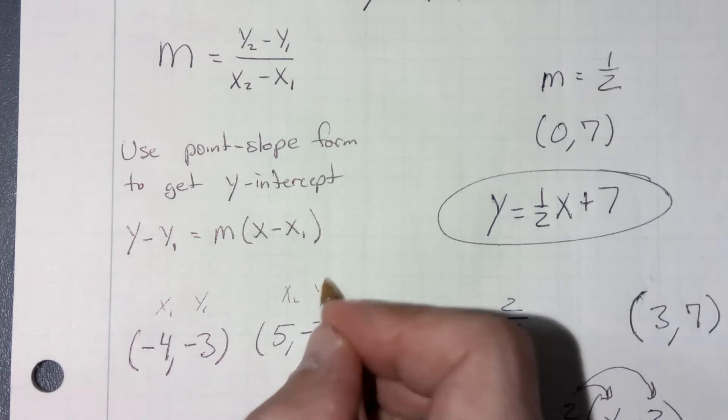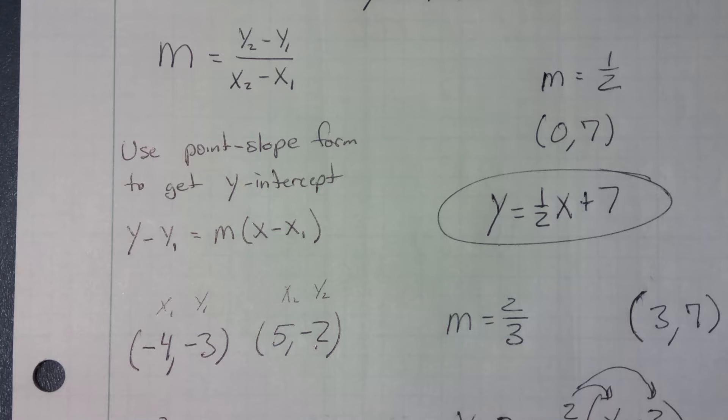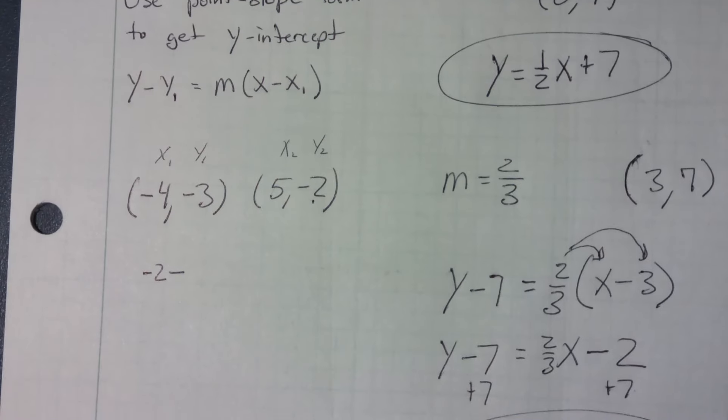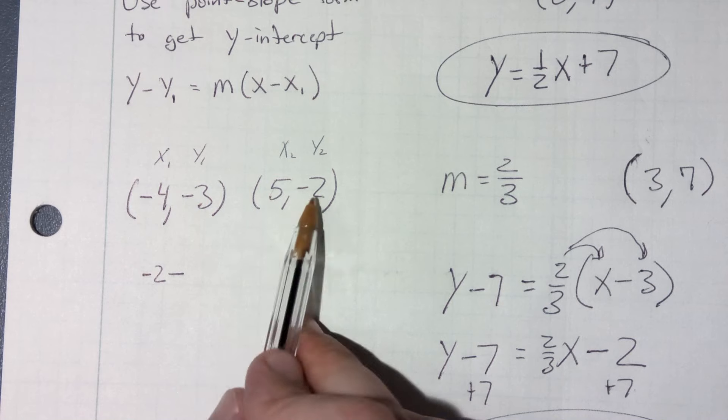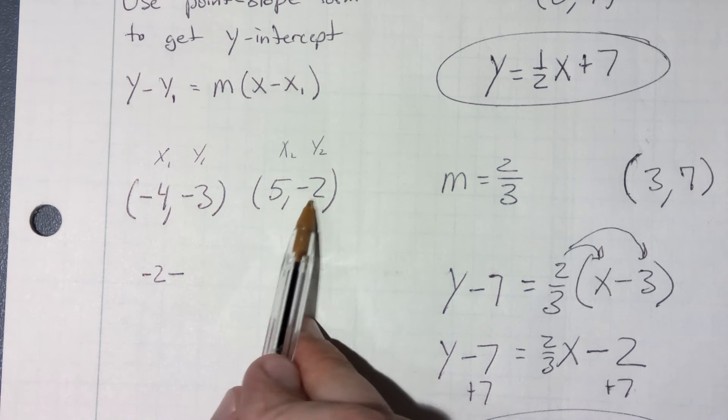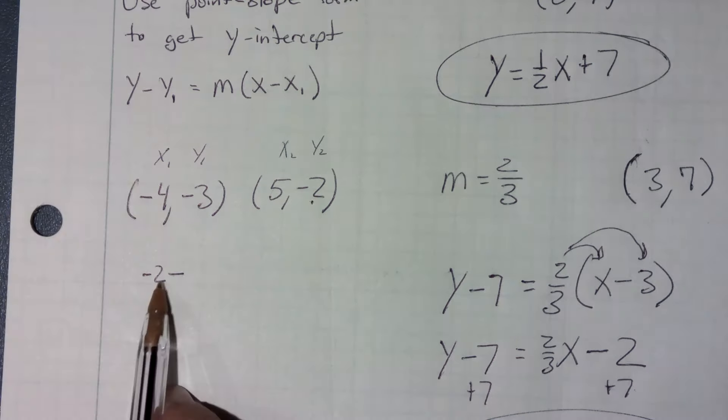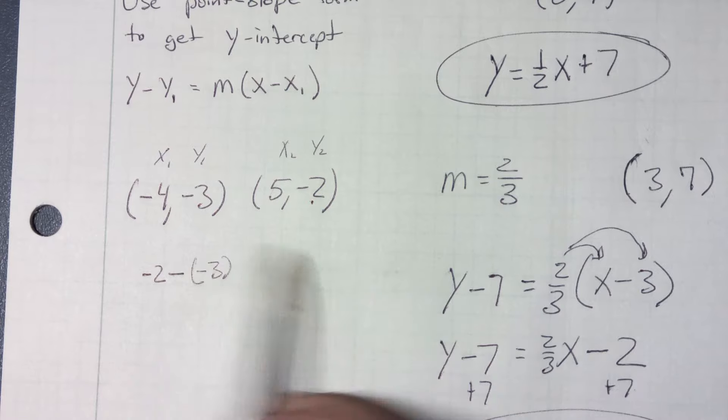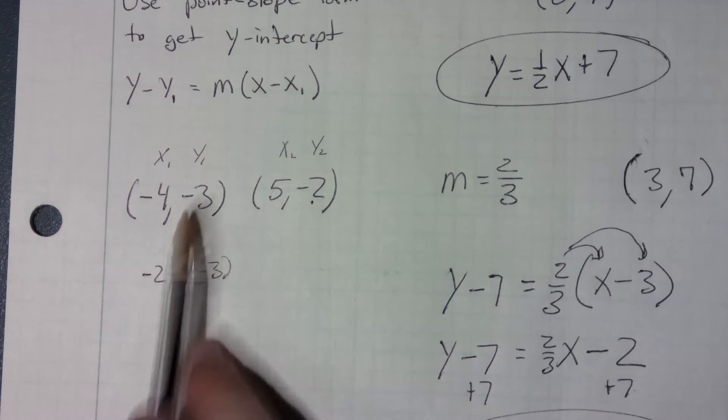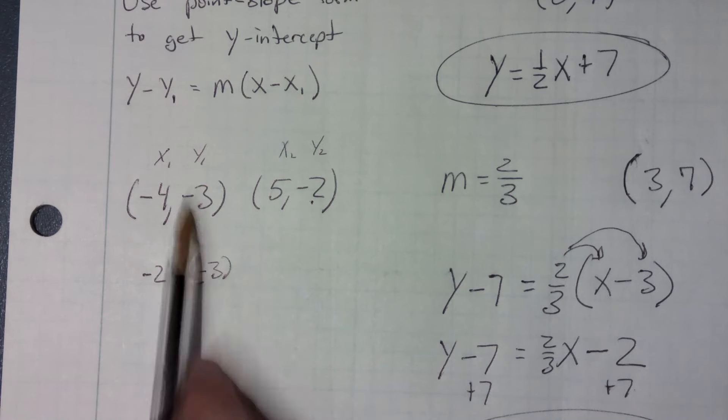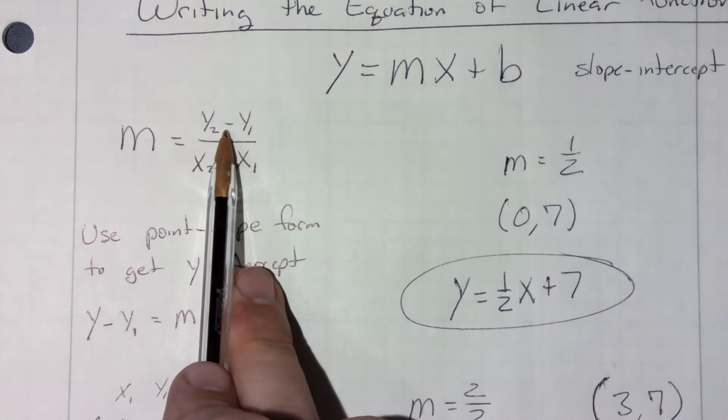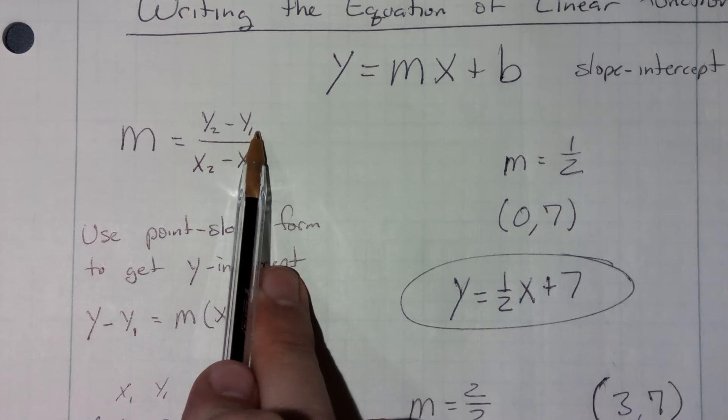So I'm going to take that second y value, negative 2. I'm going to minus off the first y value. Now be careful here with your signs. I'm minusing a minus 3. Don't just minus 3 because this y value is negative. And that slope formula, remember, I'm minusing whatever y is. So if y is negative, I'm minusing a minus.